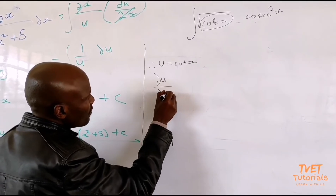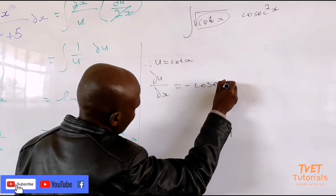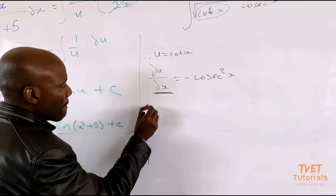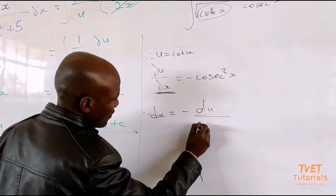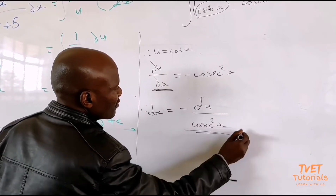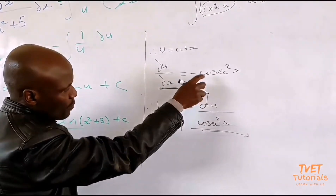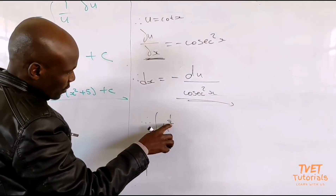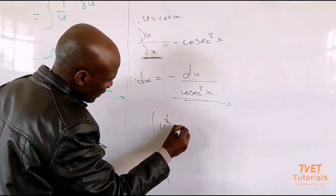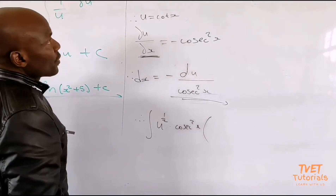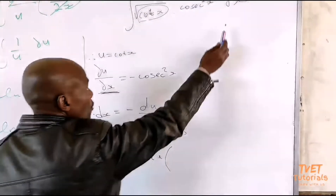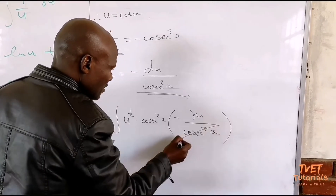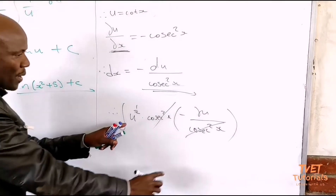So we differentiate: du/dx = negative cosec²x. Always make dx the subject of the formula. Therefore dx = negative du / cos²x. The differentiation of cot is negative cosec²x — it is on the formula sheet. Substituting: cot x becomes u, the square root becomes the power of one half. Then for dx we substitute negative du / cos²x, and cos²x cancels with the denominator.